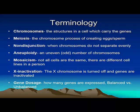The likelihood of having a second child after a first child is born with a chromosome abnormality is quoted as a 1% risk, or the risk associated with the woman's age, so older women have the potential for a higher percentage risk. To review some terminology: chromosomes are the structures in a cell which carry the genes. Meiosis is the process where chromosomes divide, creating eggs and sperm. Non-disjunction is when chromosomes don't separate evenly. Aneuploidy is when you have an atypical number of chromosomes. Mosaicism is when not all cells are the same, resulting in different cell lines in a person. X-inactivation is when the X chromosome is turned off and genes are inactive. And gene dosage refers to how many genes are expressed, whether it's balanced or unbalanced.